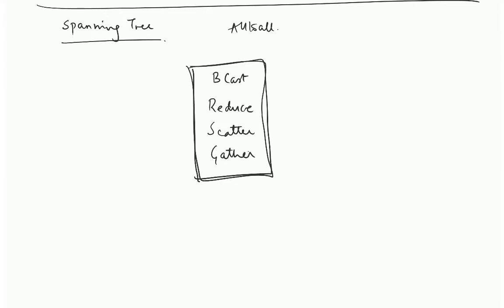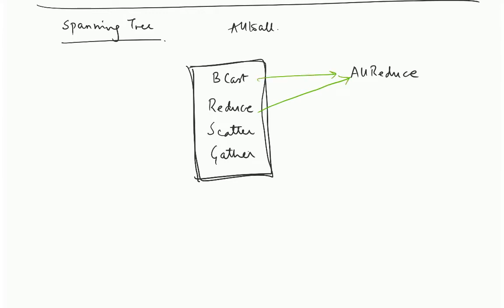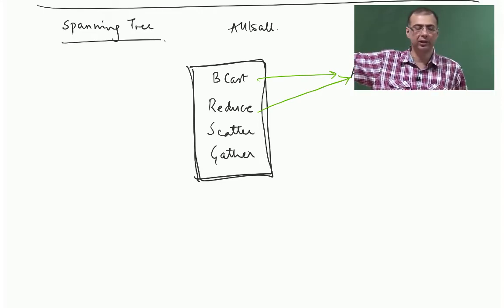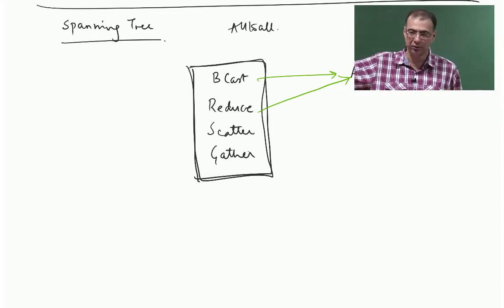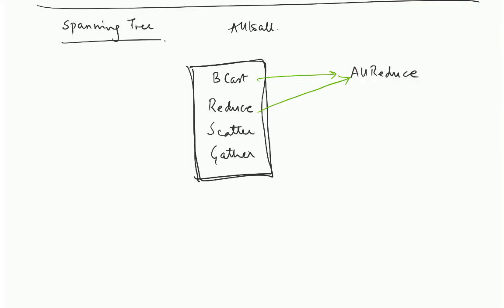Let us look at the other calls. There is all-reduce — how can we implement it? If you do a reduce followed by a broadcast, you reduce all the data to a single node and then broadcast that data to all the nodes. At the end all the processes will have the final operation performed on all the elements of the array. That is how you do all-reduce.